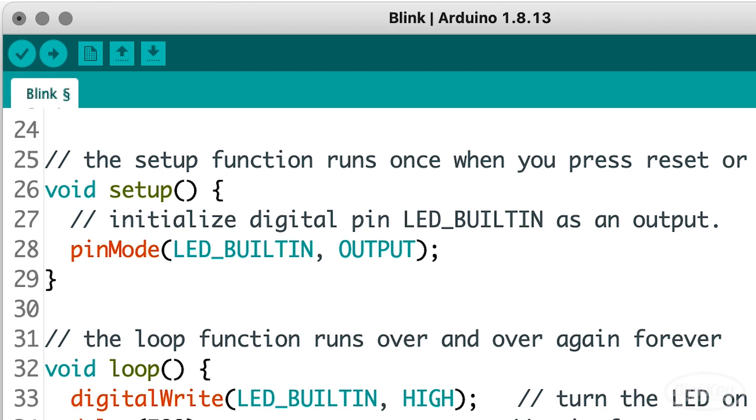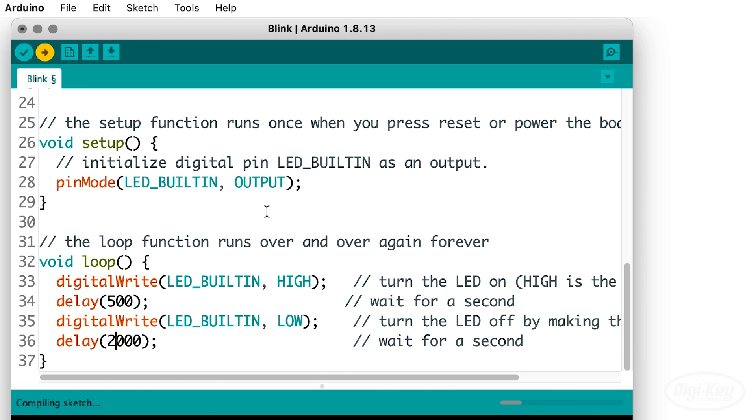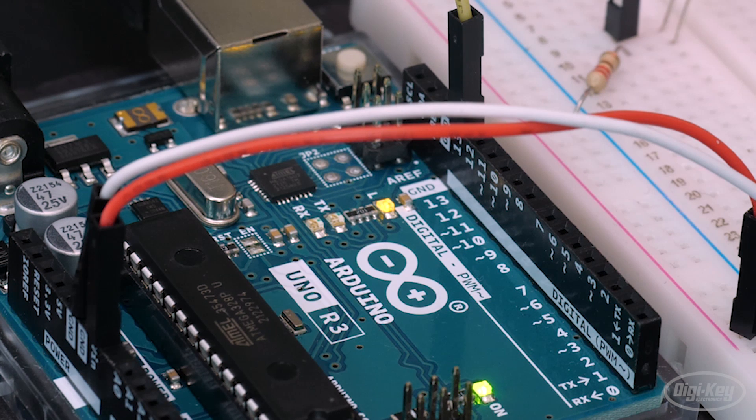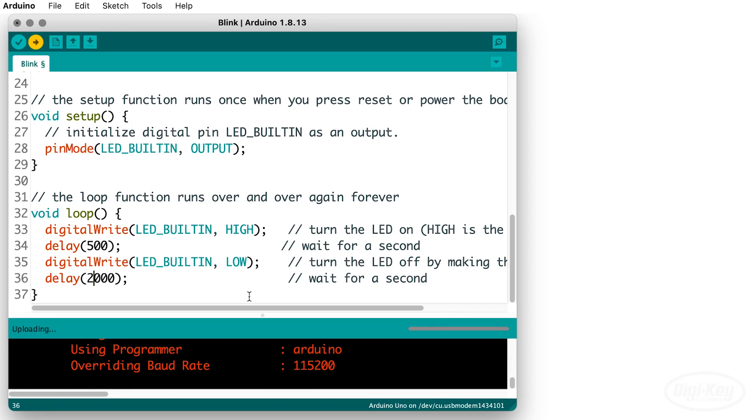Now click the upload button to transfer the blink example code to the Arduino board. The LEDs labeled TX and RX will flash to show that the software is talking to the board, and then you'll get a message that says done uploading, and moments later our custom blink appears.